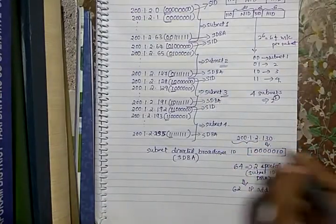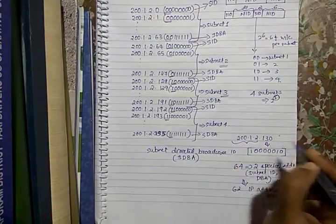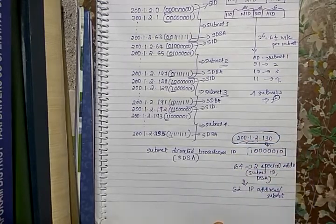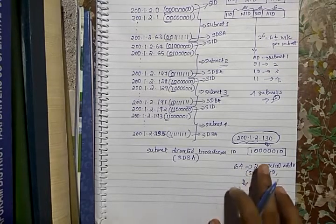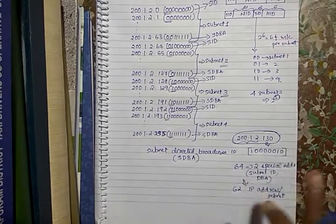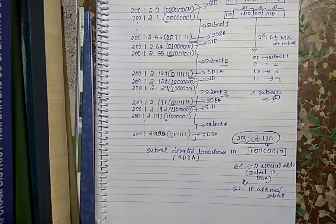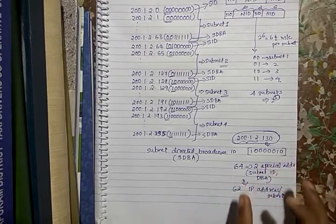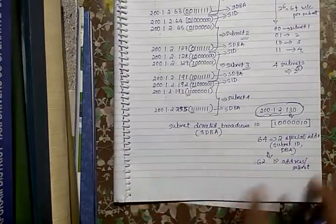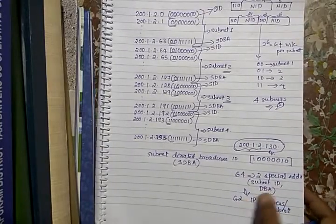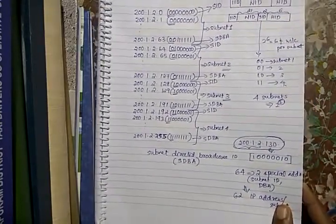Now the question is: if someone gives you an address such as 200.1.2.130, how do you automatically identify that it belongs to subnet 3? That is done with the help of a parameter called the subnet mask. We will see how this automatic process works using the subnet mask.